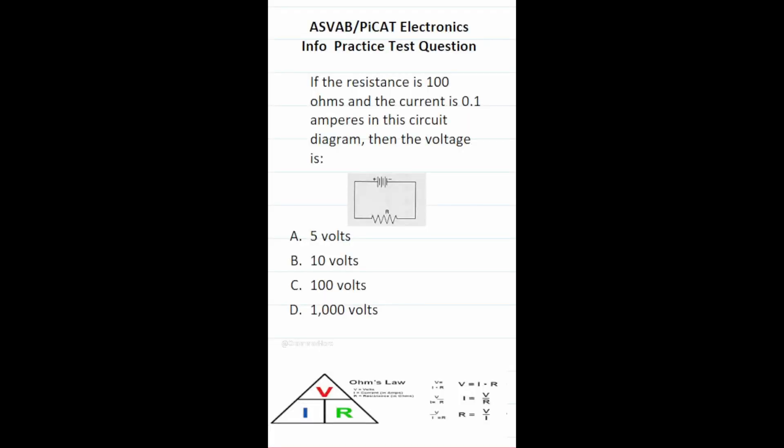This electronics information practice test question for the ASVAB and PiCAT says this. If the resistance is 100 ohms and the current is 0.1 amps in this circuit diagram, then the voltage is. To answer this one, you have to know Ohm's law. You can see that down here. It's V for voltage equals I, that's current measured in amps, times R, resistance measured in ohms.